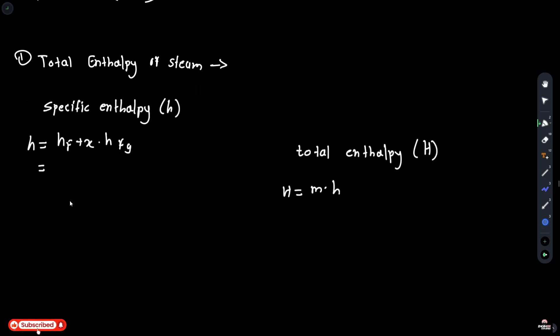The total enthalpy of the steam: specific enthalpy H is 720.9 plus X is 0.85 multiplied by HFG is 2046.5. So H is equal to 2460.42 kJ per kg.